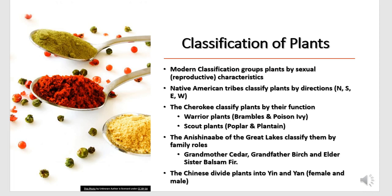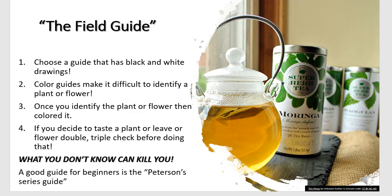Scout plants included poplar and plantain. The Anishinaabe of the Great Lakes classified plants by family roles — cedar became grandmother cedar, birch became grandfather birch, and elder and balsam fir had similar roles. The Chinese divided plants into yin and yang, taking into account female and male energies.